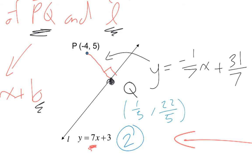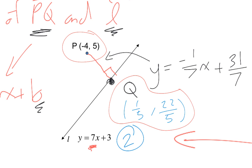Since we want to figure out the shortest distance between point P and line L, we now have both coordinates P and Q. Once you have those two coordinates, you can plug them into the distance equation. Again, it is the strategy that is most important when dealing with these multi-step questions.